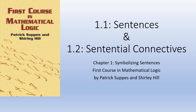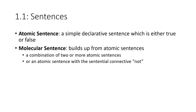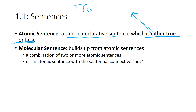I'm the amateur logician. Section 1.1 from the textbook is on Sentences. In propositional logic, in mathematical logic, there are two basic types of sentences: atomic sentences and molecular sentences. An atomic sentence is a simple declarative sentence which is either true or false. That's the key here — it must be either true or false in principle. In other words, we might think of this as what's called truth functional.